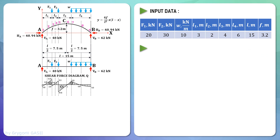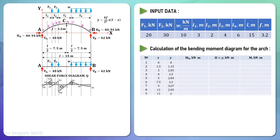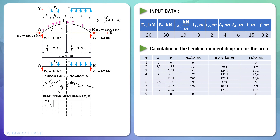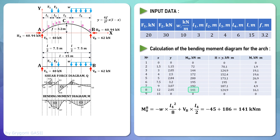Now let's draw the bending moment diagram M for the arch. This calculation is also carried out in tabular form. Using the calculated data, the bending moment diagram is drawn. M0 in the table is the value of the bending moment for the beam in the same cross section. Let's calculate the bending moment M0 for the beam, for example, in cross section number 8. So, the bending moment diagram for the arch is obtained.